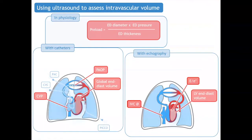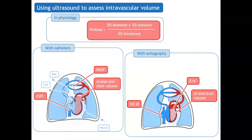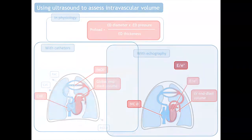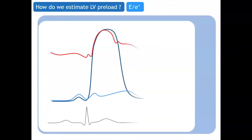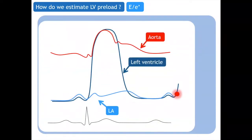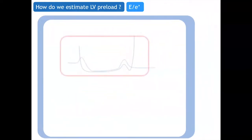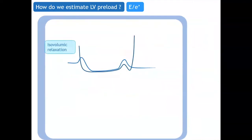The most used way to estimate cardiac preload at the left side is by looking at the E over E' ratio. To understand how it is possible to estimate LV filling pressure with the E/E' ratio, you must remember the different pressure cycles of the heart: the left ventricular pressure, the aortic pressure, and the left atrial pressure. We will focus on the diastolic phase and these LV and left atrial pressure traces during diastole.